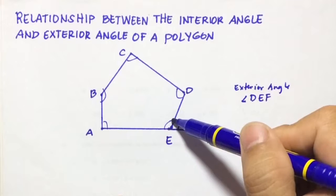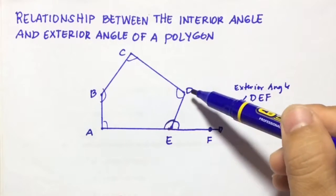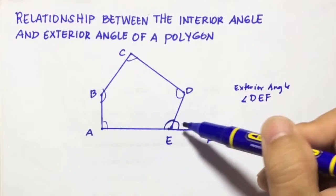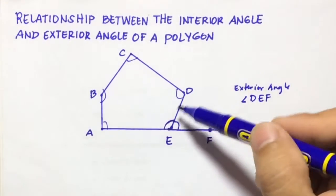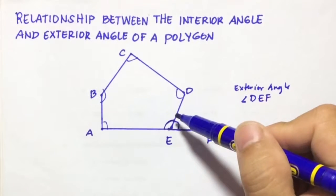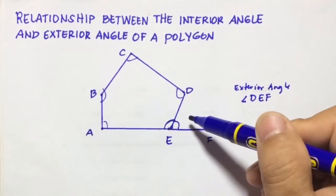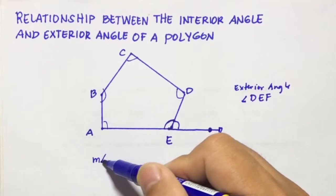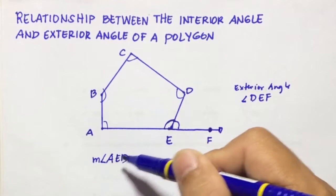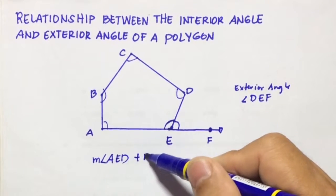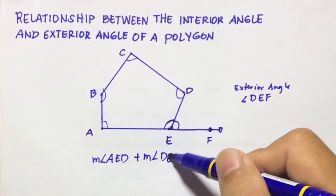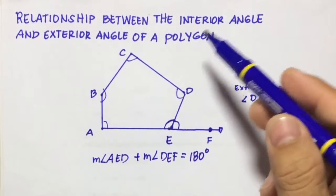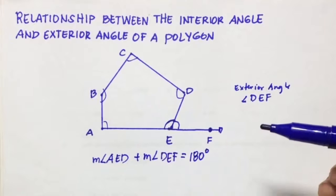Now if we look at the relationship between these two angles — angle AED, the interior angle, and angle DEF, the exterior angle — we can see these two form a linear pair. Linear pair means they are supplementary, so the sum of these two angles is equal to 180 degrees. So the measure of angle AED plus the measure of angle DEF equals 180 degrees. This is the relationship between the interior angle and the exterior angle of a polygon.